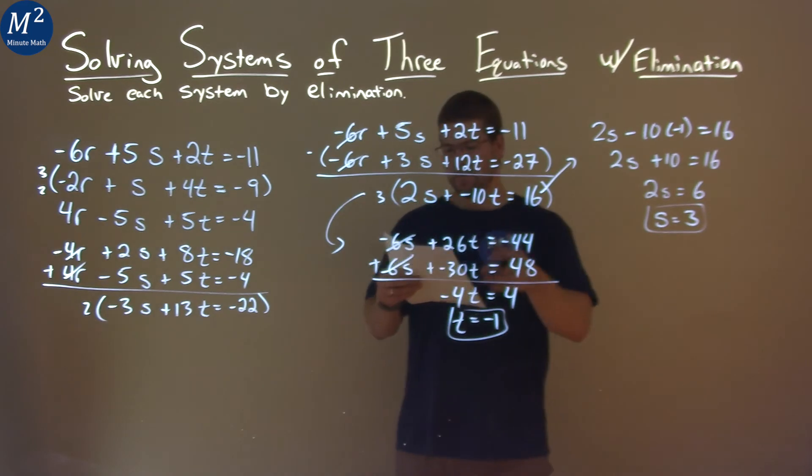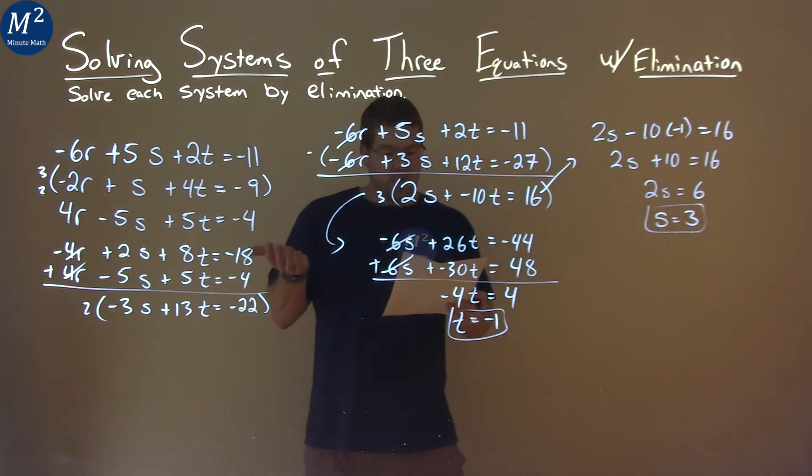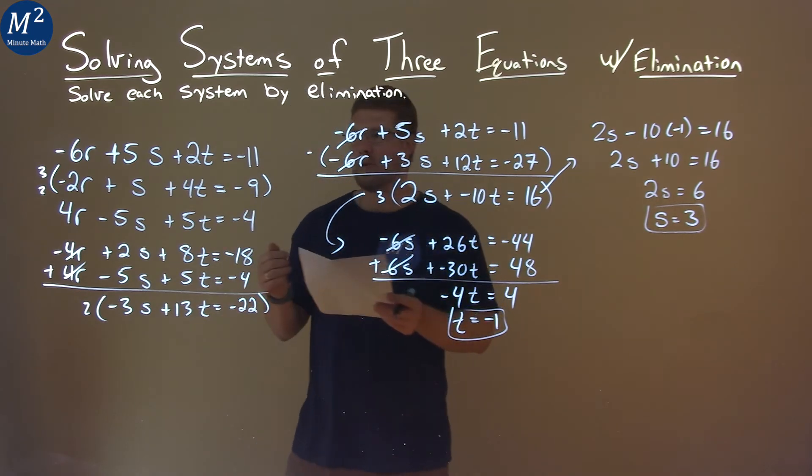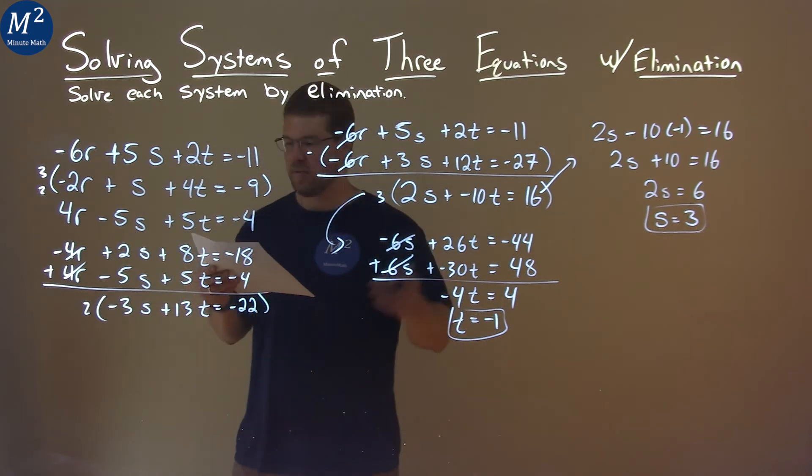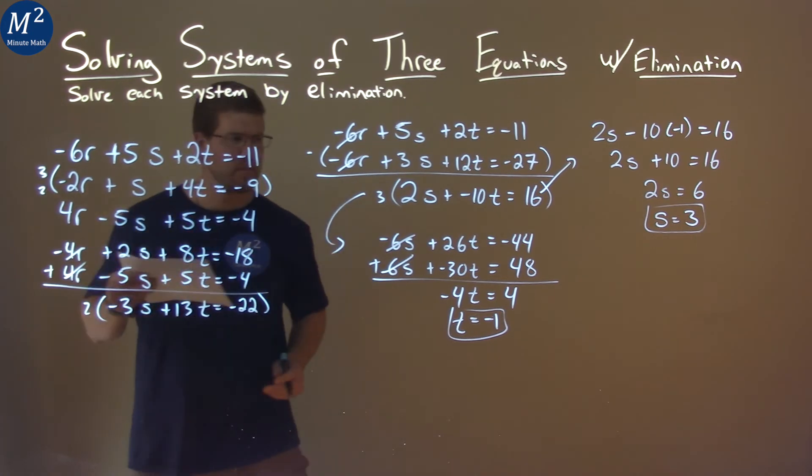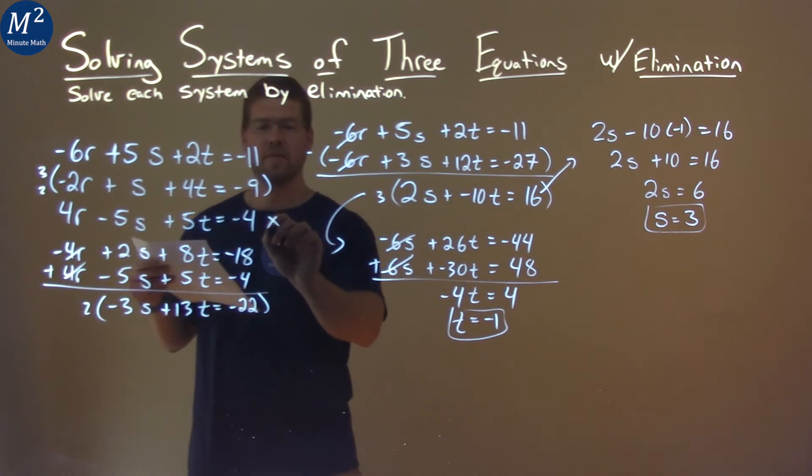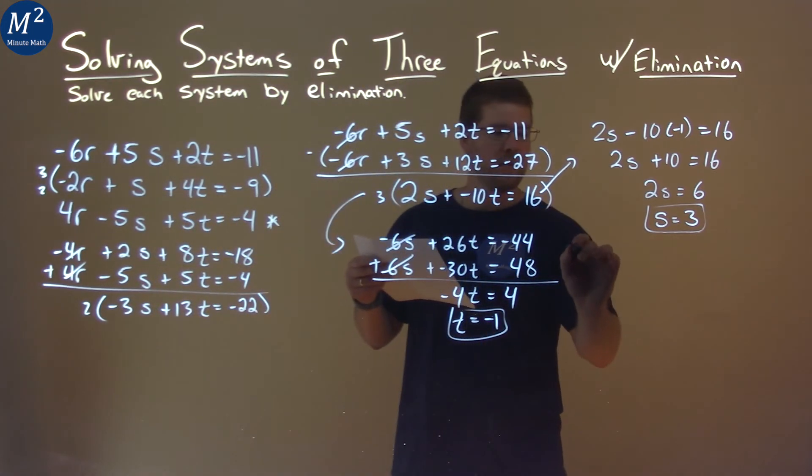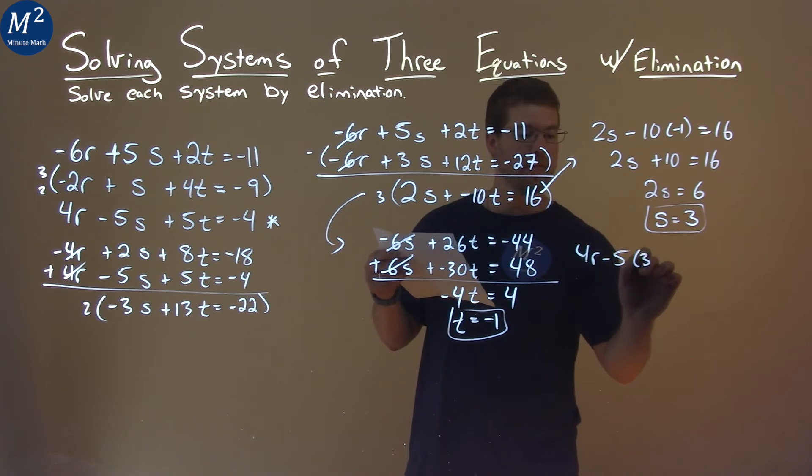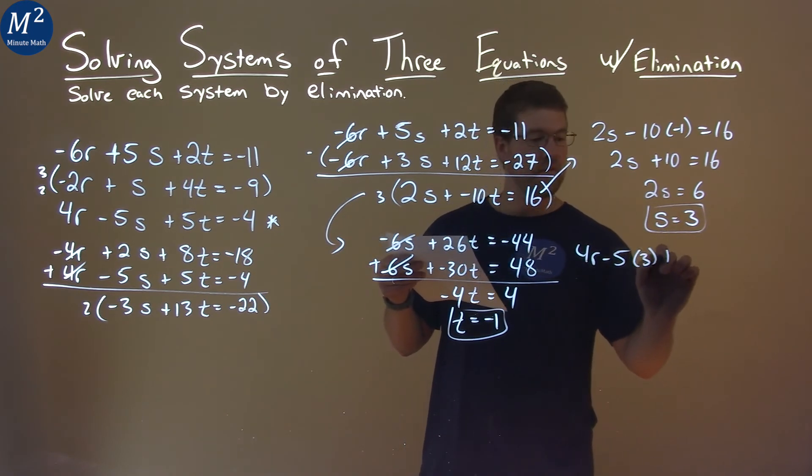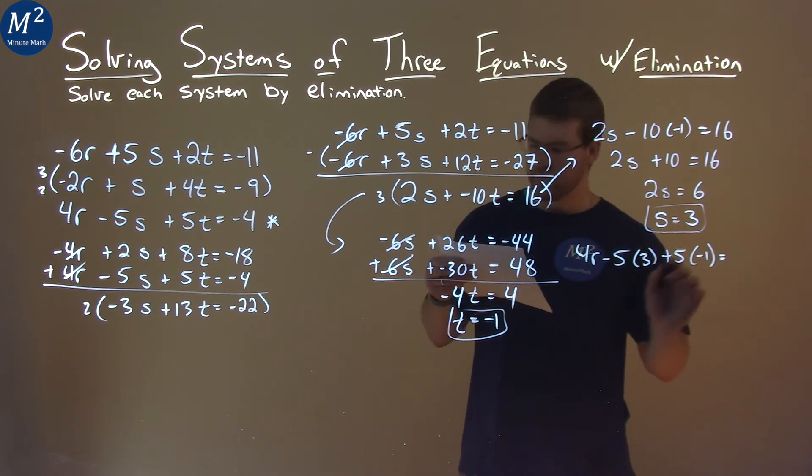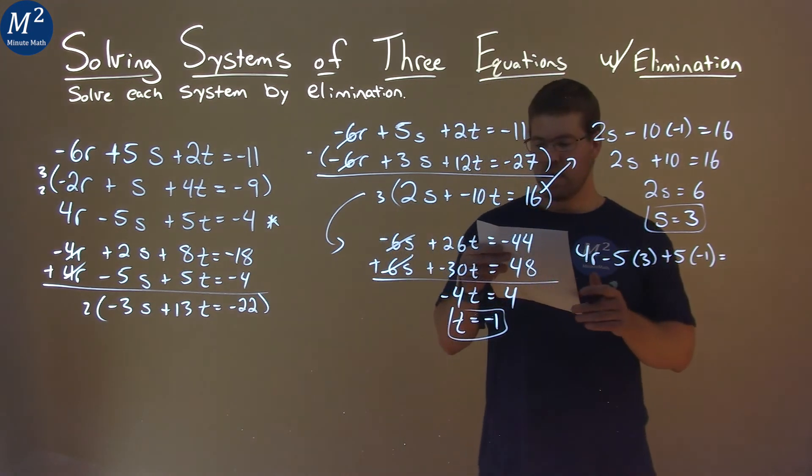So if s equals 3 and t equals negative 1, we can solve for r. We pick an equation and plug in t and s for our variables there. So the equation I picked was the last equation here, the last one. I'll put 4r minus 5, instead of s I'm going to put 3 that value here, plus 5, and instead of t I put negative 1, equals negative 4.